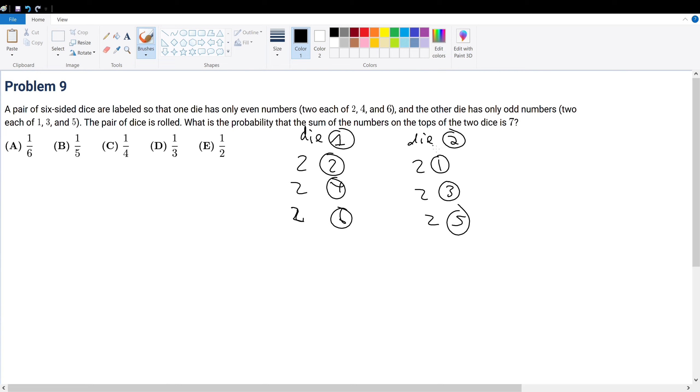So what is 7 equal to? 1 plus 6. Notice one has to be even, one has to be odd. So 7 can equal 2 plus 5. 7 equals 3 plus 4. And then we have symmetry, so we don't consider anything else.